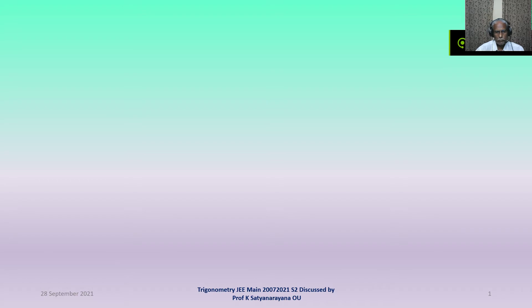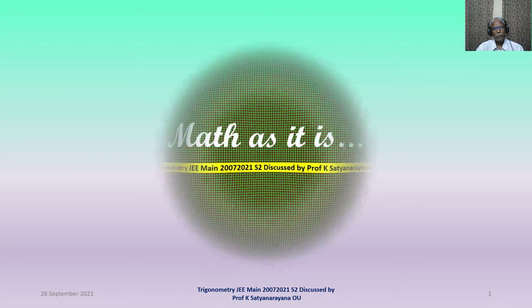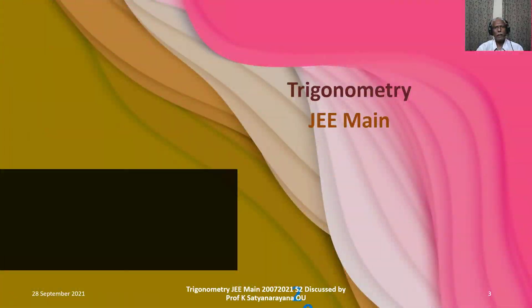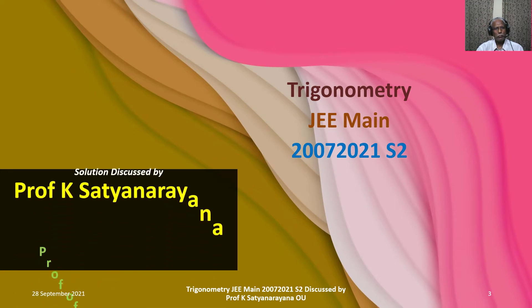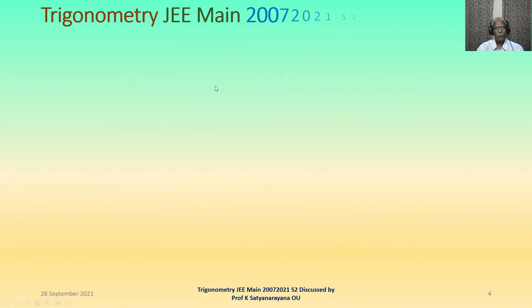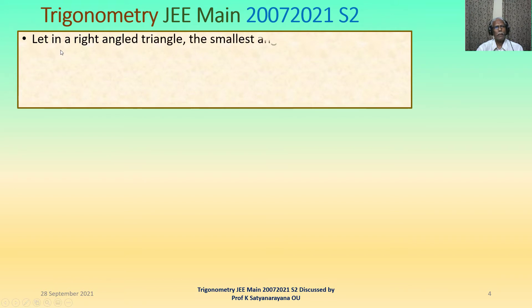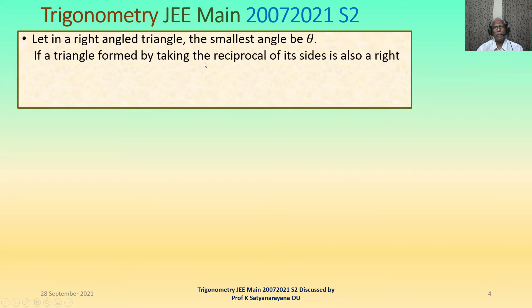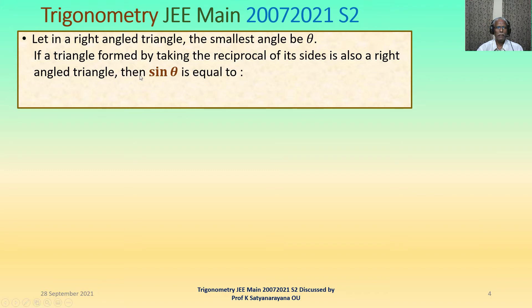Here is a problem on right angled triangles wherein we are asked to find the value of sine of the least angle in a right angled triangle. This problem appeared in the Joint Entrance Examination Main held on 20th July 2021 in the afternoon shift. The problem is: let the smallest angle in a right angled triangle be theta. If a triangle formed by taking the reciprocals of its sides is also a right angled triangle, then find sine theta.